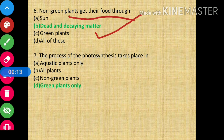Question number 7: the process of photosynthesis takes place in? The answer is green plants only.